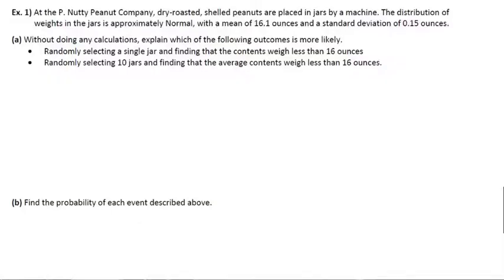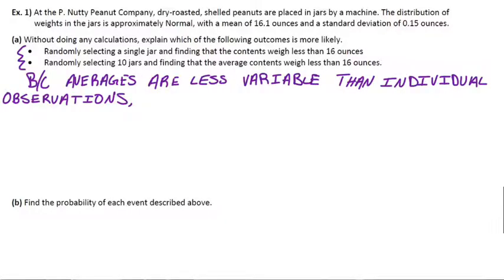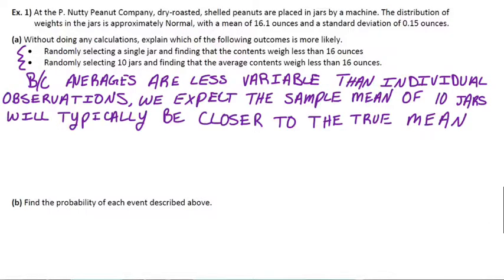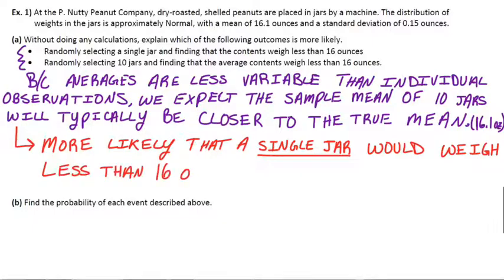Between those two, we know averages are definitely less variable than individual observations. We might see some wild and crazy outliers as individuals in a single jar, but if we do the average of 10 jars, even those outliers will get averaged out and be closer to the mean. Because averages are less variable than individuals, we expect the sample mean of 10 jars will typically be closer to the true mean. We don't expect that average from the 10 jars to stray too far from 16.1. So without even doing any calculations, we know it's more likely that a single jar would be the one to weigh less than 16 ounces.